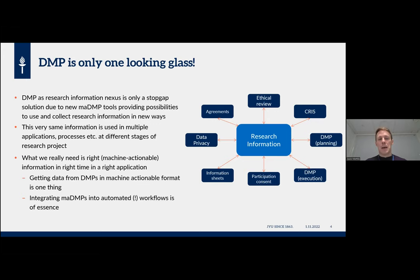We are now living in a situation where when you make your information sheets or data privacy notices, you have to do everything from zero, even though you might already have the data available from your DMP or participation consents. That is the kind of practical research information we are unable to use but should see as a priority. What we really need is the right information, in the right time, in the right application.